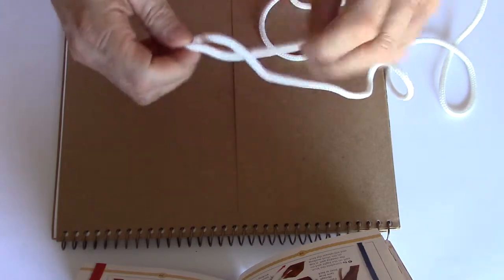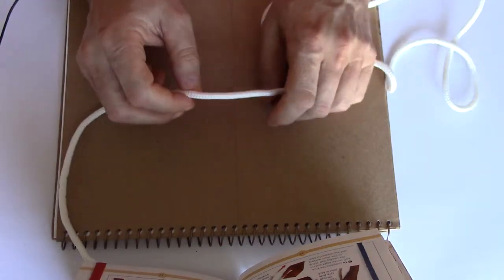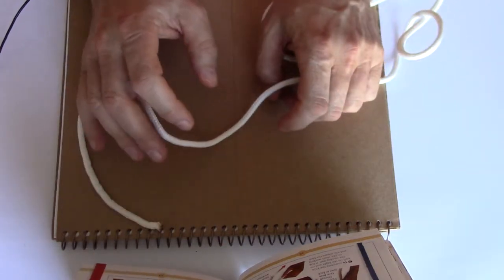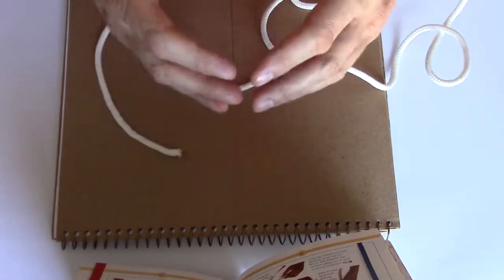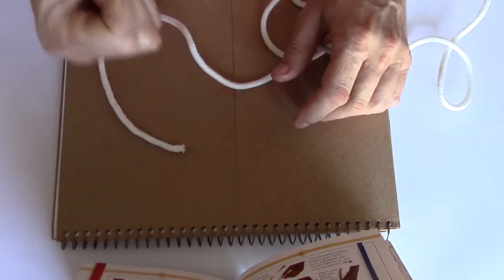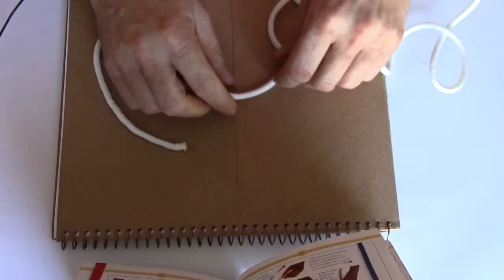Now we're going to make a slipped overhand knot. A slipped overhand knot is good for a lot of things because it gives you a loop that you can attach to something to make a really strong connection. And I'll show you that in just a second.